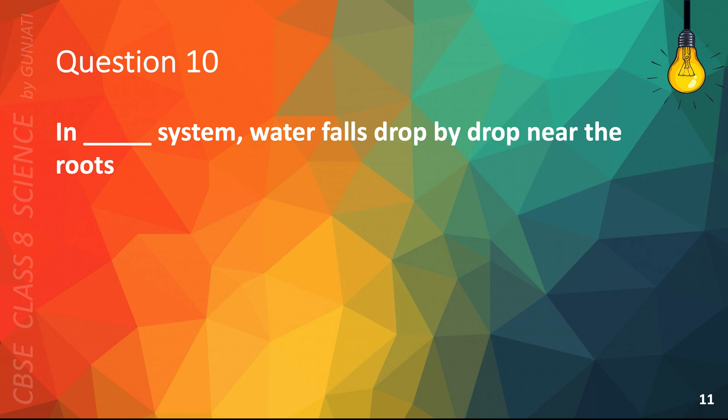Question 10. In blank system, water falls drop by drop near the roots. A. Sprinkler, B. Drip, C. Screw, or D. Dakeley. The correct answer is B. Drip.